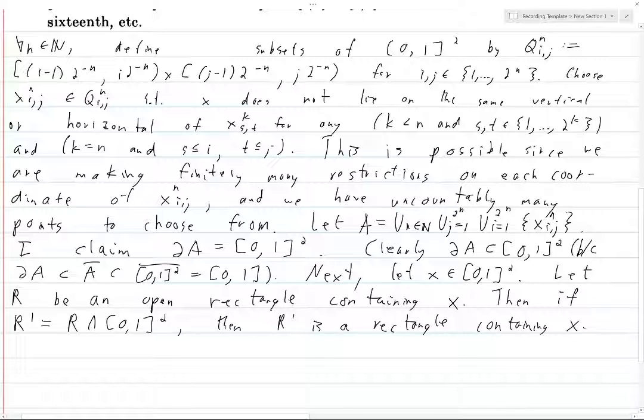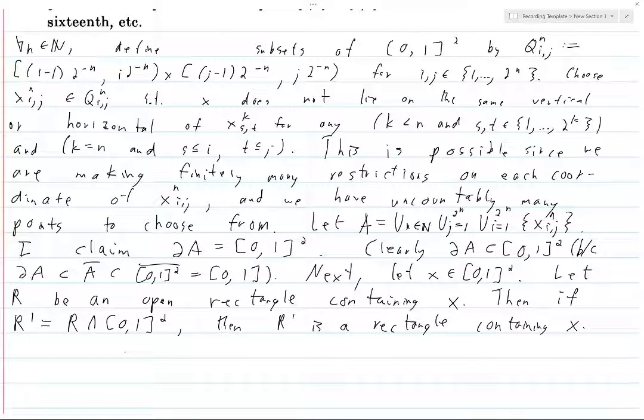Here's how we're going to do this. If we let R' equal R intersect [0,1]², then R' is a rectangle containing x. The fact that it contains x is obvious since both R and [0,1]² contain x, and it's a rectangle because this is the intersection of two rectangles. Even if we haven't talked about that in a previous exercise, it's pretty obvious that two rectangles that intersect non-trivially are going to give you a rectangle.